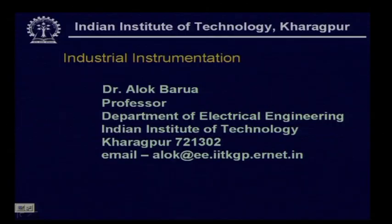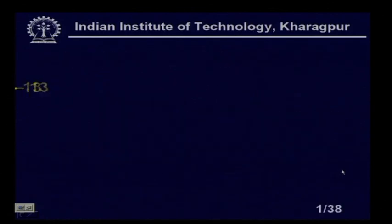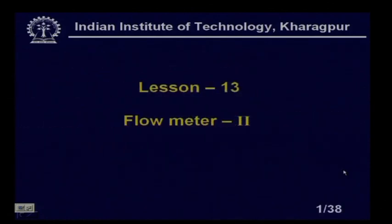This is Lesson 13 of industrial instrumentation. We will continue with the flow meters. In Lesson 12 we also covered flow meters because the variety of instruments for measuring process parameters like flow is huge in number. Unlike temperature and pressure, where very few sensors are available, the number of flow meters is quite large. So this Lesson 13 is also for flow meters, and we have named it Flow Meter 2.